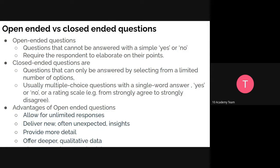For closed-ended questions, these can only be answered by selecting from a limited number of options — usually multiple choice, a single-word answer like yes or no, or a rating scale. When you give a rating scale it has to be understandable — ranging from strongly agree, agree, neutral, disagree, to strongly disagree. Whatever question you put on a rating scale should be clear.